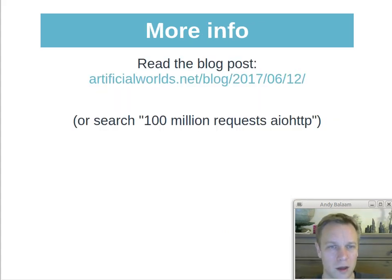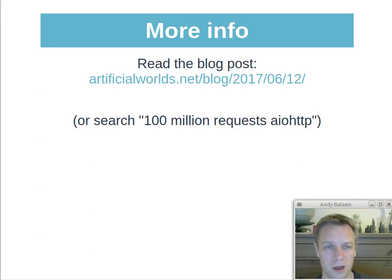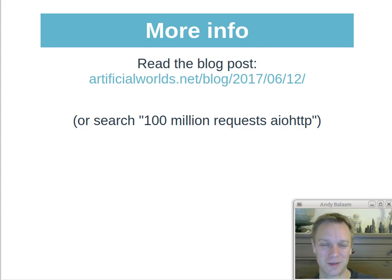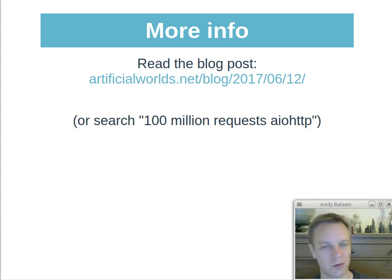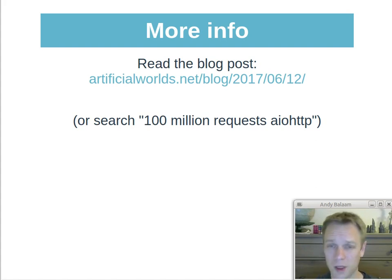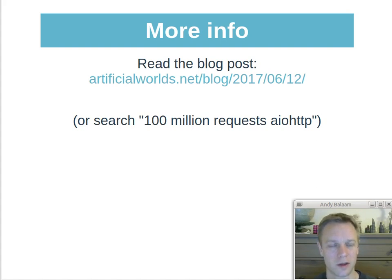You can get much more detail about all of this code and the concepts if you check out the link to the blog post. Search for Andy Balaam, search for artificialworlds.net — you should find my blog. Search for '100 million requests' and 'aiohttp' and you should find the blog post as well. If this stuff is unfamiliar, going over again in written form — what's a task, what's a future, what's an event loop, what's await, what's async — might be useful. Also read the links from people who've built on what I did, and read the thing I was building on when I wrote that blog post.